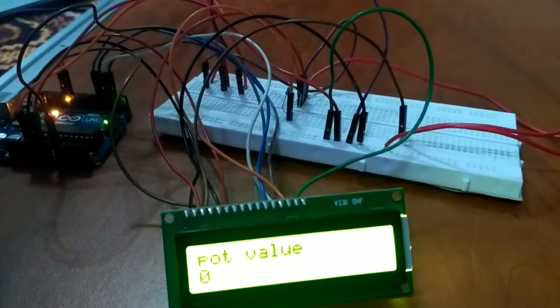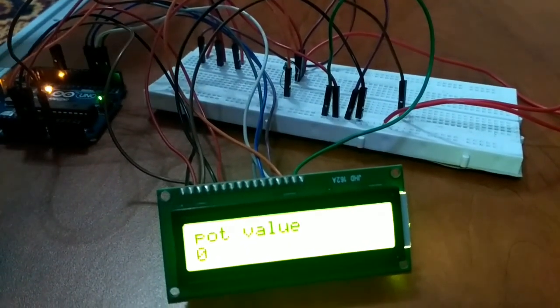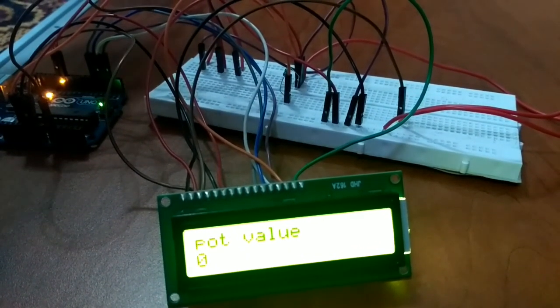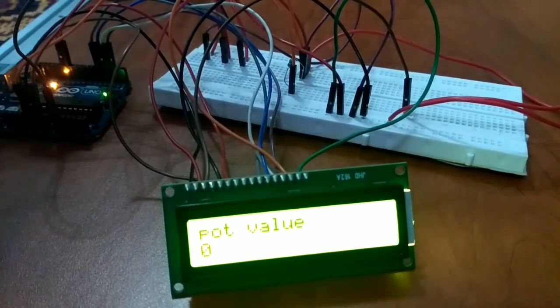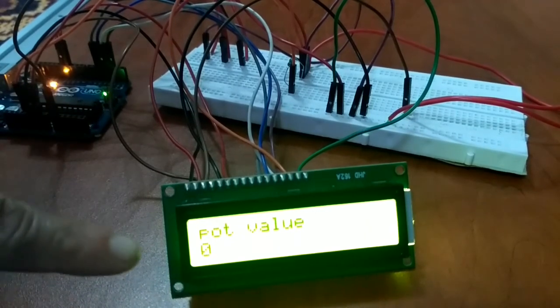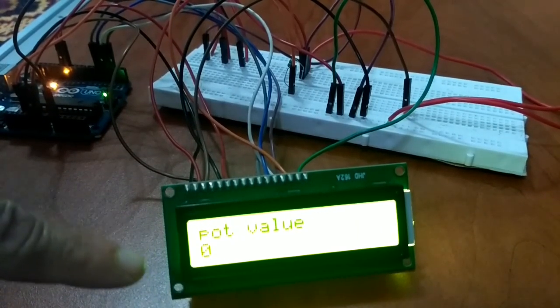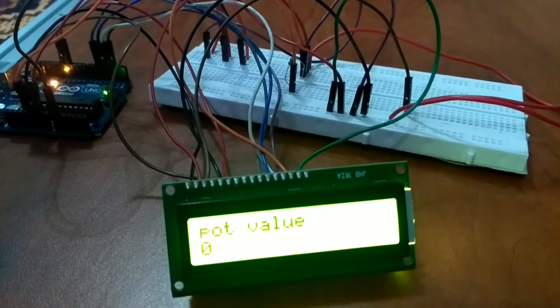I have downloaded the program, and this is the starting point of this potentiometer where it is showing the value equal to 0. Now I will change this pot value, and you will find that this reading will change from 0 to 1023.